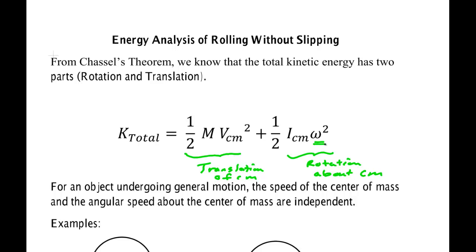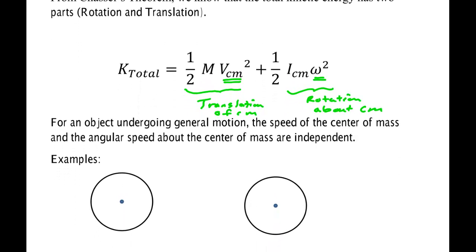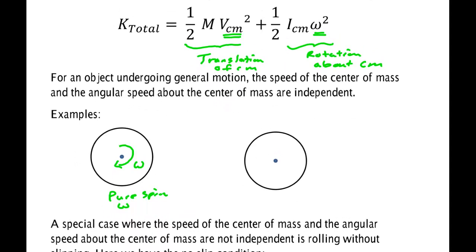In general, omega, the speed at which it rotates, is completely independent of the speed at which the center mass moves. For instance, we can have an object that's spinning very fast, pure spin. Omega might be very large and the speed of the center mass is zero.